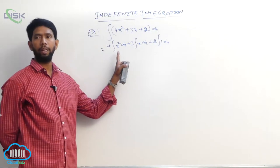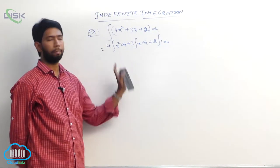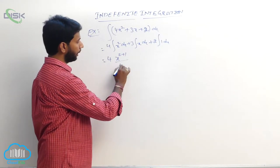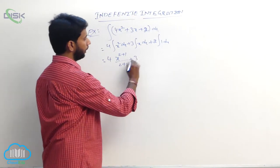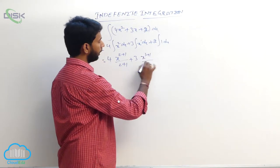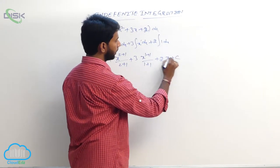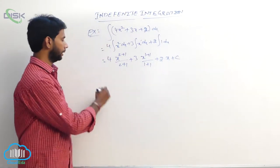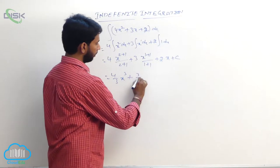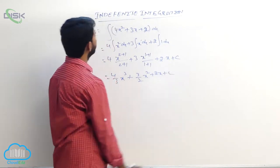Each term is of the form integral of xⁿ, meaning x^(n+1)/(n+1). So: 4 times x^(2+1)/(2+1) plus 3 times x^(1+1)/(1+1) plus 2 times x plus constant. The result is (4/3)x³ plus (3/2)x² plus 2x plus constant. That is the solution for the first example.